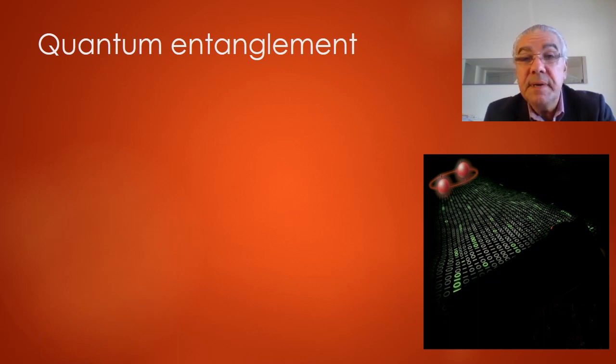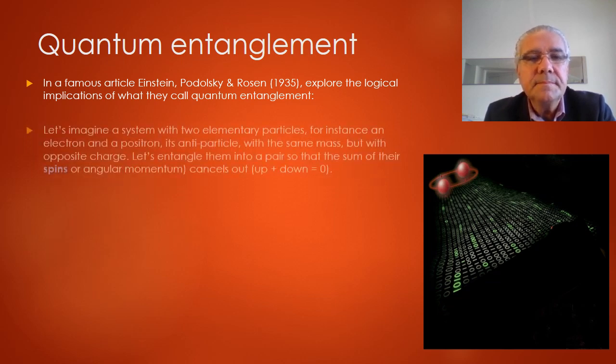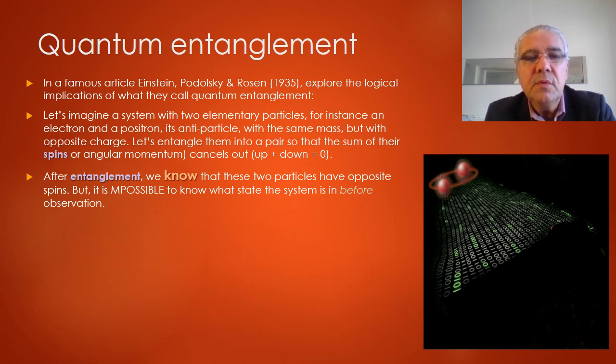Another weird experiment is that of quantum entanglement. In a 1935 article, Einstein, Polosky, and Rosen raised the logical implications of what they call quantum entanglement. They imagine a system with two elementary particles, for instance, an electron and positron. They have the same mass, but they have opposite charges. And let's entangle them, meaning that let's create a system out of the two, and let's create it so that the sum of their spin or angular momentum cancels out. That means one spin is up for one particle and the other one is down. After this entanglement, we know that these two particles have opposite spins, but it is impossible to know what state the system is in before we observe it.